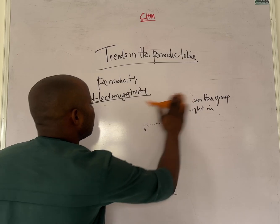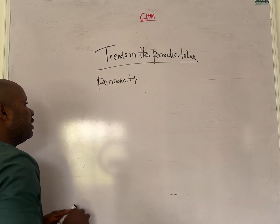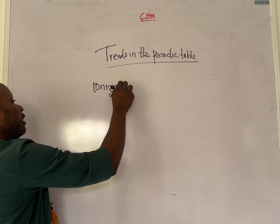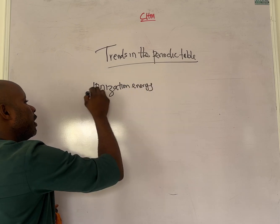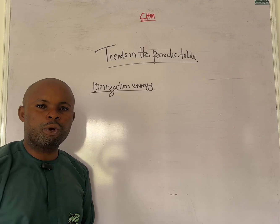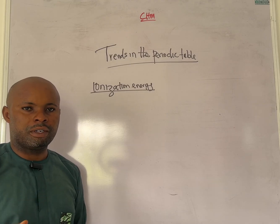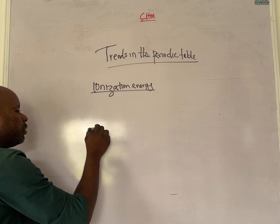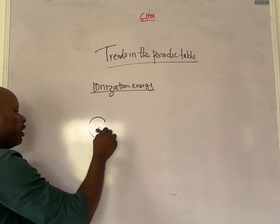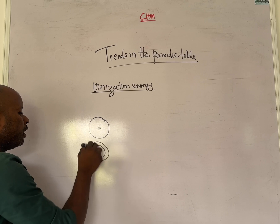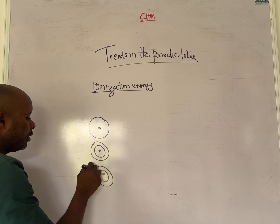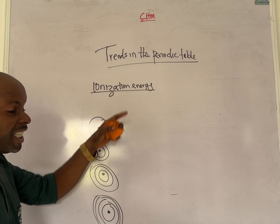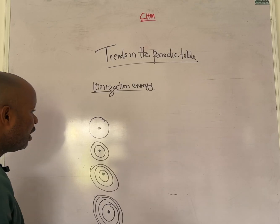The next trend is ionization energy. Ionization energy is the energy needed to remove an electron from the shell of an atom. Using shells to explain — in period one the distance between the nucleus and the valence electron is very close, in period two it is further, period three further still, and period four even further.